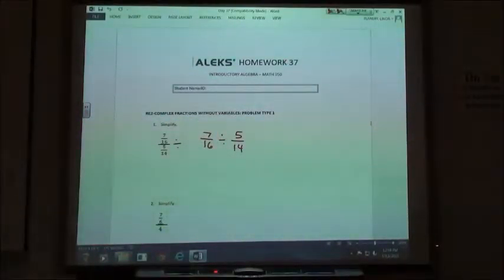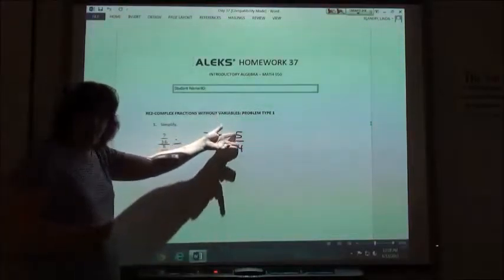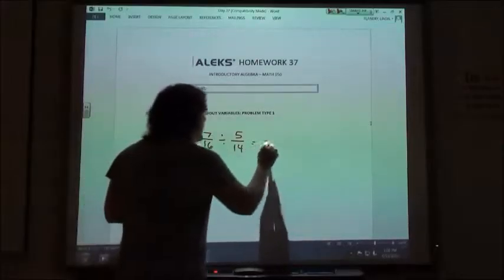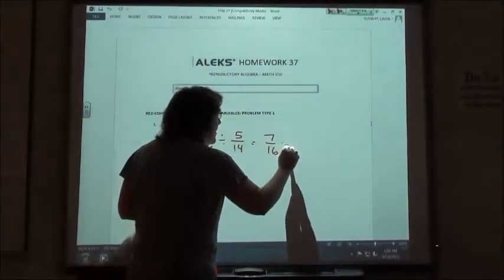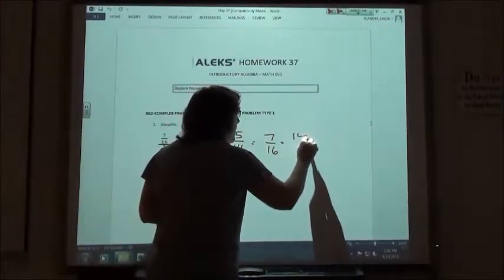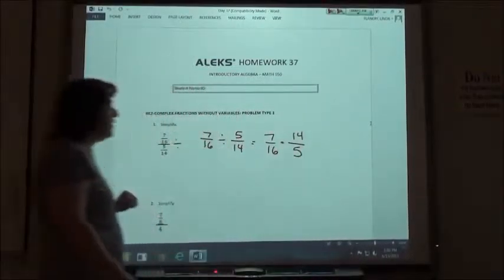Well, way back in the review, we did dividing fractions. When we divided fractions, we had to invert the second fraction and multiply. So we're going to take 7 16ths times the reciprocal 14 5ths.